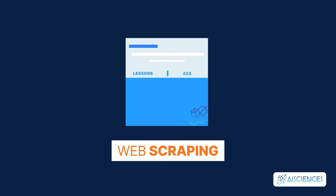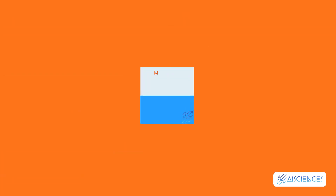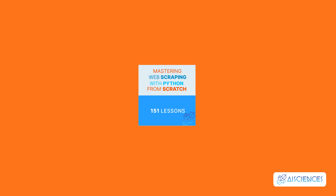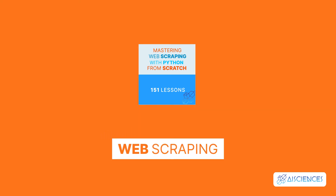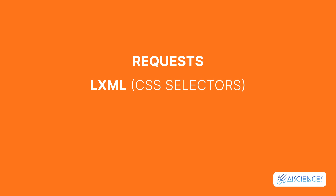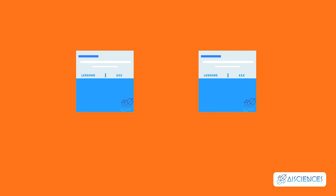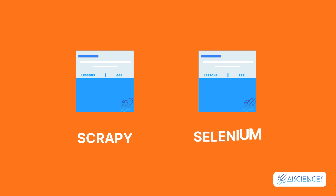Your path to web scraping mastery: we have an in-depth course on the AI Sciences platform that covers web scraping. The name of the course is Mastering Web Scraping with Python from Scratch — 151 lessons. In this learning-by-doing course, you will master the fundamental concepts of web scraping first, then the focus will shift to advanced concepts. You'll learn how to use the most popular Python web scraping libraries such as Requests, LXML or CSS selectors, Scrapy, and Selenium. You'll also complete two hands-on mini-projects: in the first, you'll use the Scrapy library, and in the second, you'll use the Selenium library.